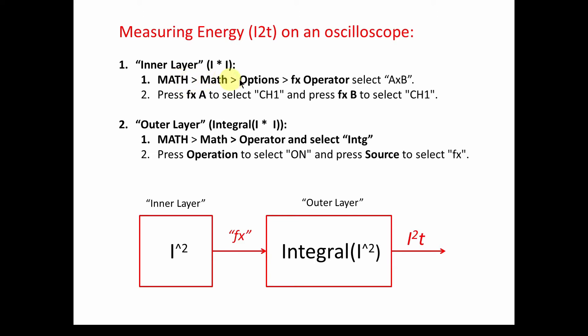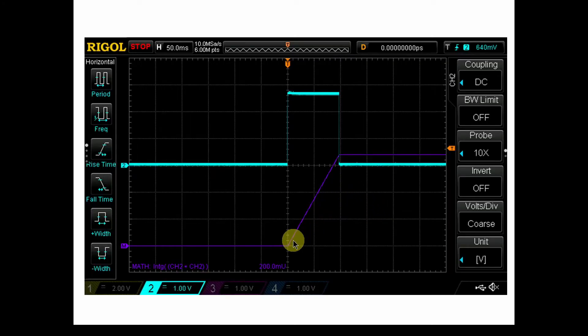The way you do it is we'll show you on the Rigol how to do it. That's basically two steps. You go into the math, there's a math button, and you go into options. And you set the fx operator, you select a times b, that's basically multiplying the current times itself. In order to do that, you can do math on the same channel. So you can multiply channel one times channel one to get channel one squared. You press a value for this a times b, and what's the b value for the a times b, and both are going to be the same channel. And that's going to square the channel one pulse. So once we got that, we got the square, then we send that into the outer layer. To do that, we go to the math operator, and select integral or integrate, press the operation to select on and press source to select fx. So now we're telling this integral to take this fx as the input, and that will give us this output.